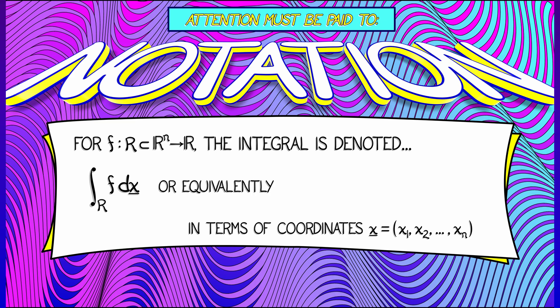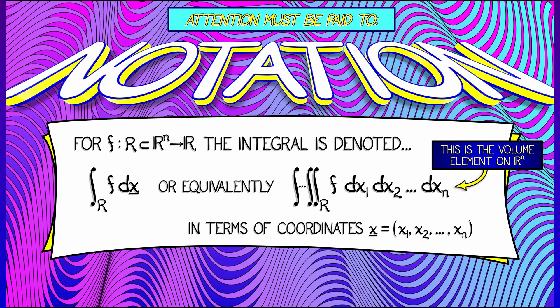If I have explicit coordinates, X1, X2, all the way up through Xn, then I can expand this integral out into a slightly different notation where I take n integral signs and stack them together. And then my volume form, instead of DX with the underline, could be written out as DX1, DX2, etc., all the way up through DXn. This connotes the fact that my infinitesimal volume element is like a little rectangular prism with dimensions DX1, DX2, all the way up through DXn.